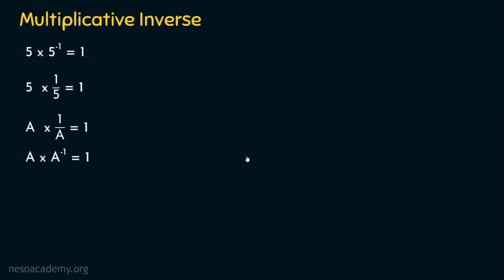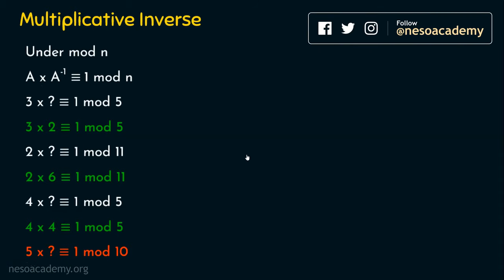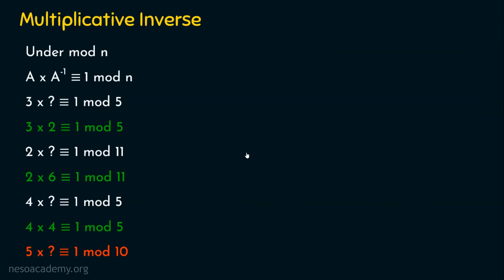From the last presentation, we understood what multiplicative inverse is, and we also saw how to find multiplicative inverse manually for smaller numbers under modulus. When small numbers are given, it's easy to find the multiplicative inverse. But think if the number is a big number — obviously, we need some algorithm. For that, we are going for the extended Euclidean algorithm.